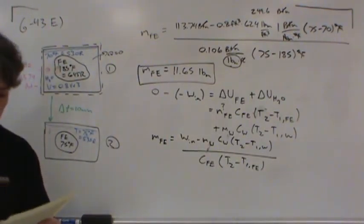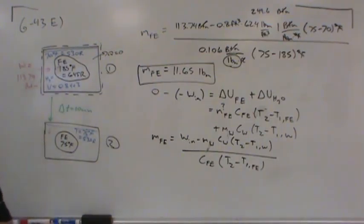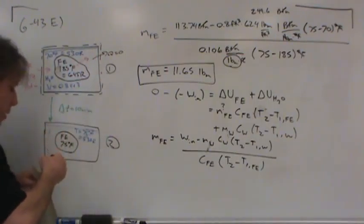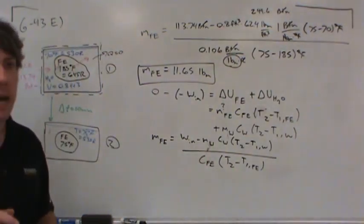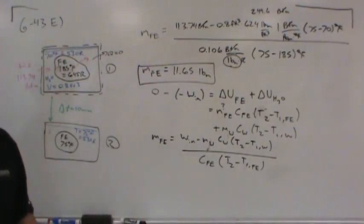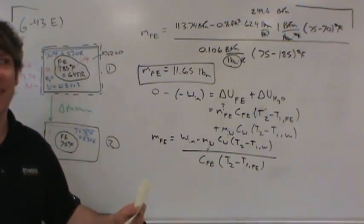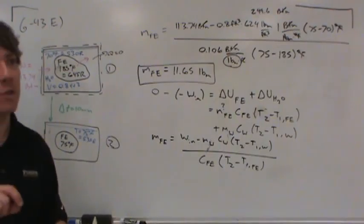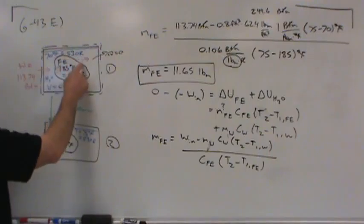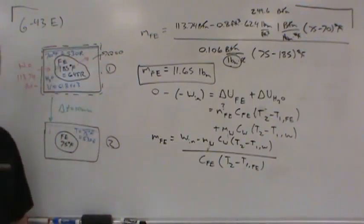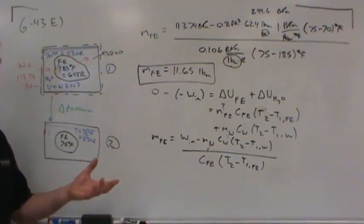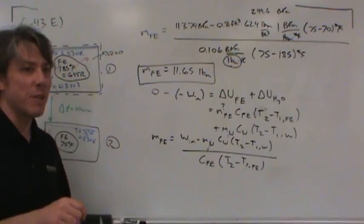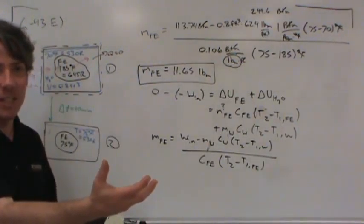Part B: determine the entropy generated. Heat flowed from the iron to the water, and heat carries entropy with it — so the entropy of the iron went down and the entropy of the water went up. But unlike energy, entropy is not conserved: it is generated. The entropy lost by the iron will be less than the entropy gained by the water — the difference is entropy generated from nothing. The more irreversible the process, the more entropy is generated.